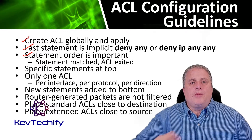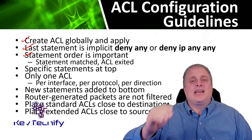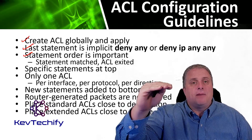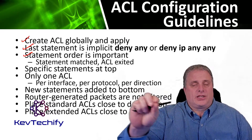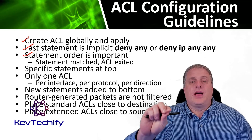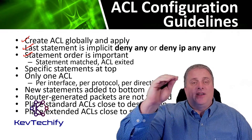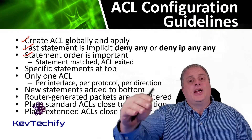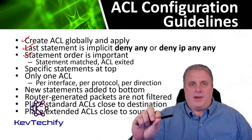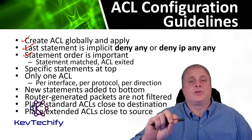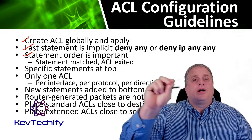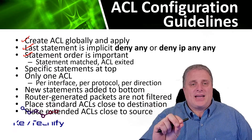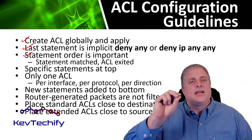Statement order is important because ACLs are processed top-down. It goes through the first access control entry, and if it matches, it does what that access control list is supposed to do — permit or deny based on how it's applied. If it doesn't match that first ACE, it goes to the next ACE. Does it match? If yes, it acts; if not, it moves to the third, fourth, and so on. If no statement is matched, that ACL is exited.